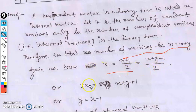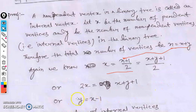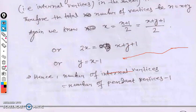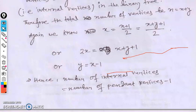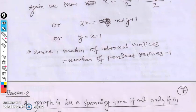Multiplying both sides by 2: 2x = x + y + 1. Rearranging: y = x - 1. This shows that y, the number of non-pendant vertices, equals x minus 1, where x is the number of pendant vertices. Hence, the number of internal vertices equals the number of pendant vertices minus 1, proving the theorem.